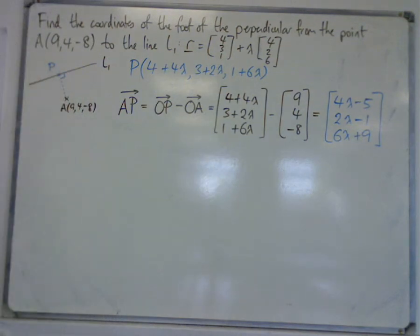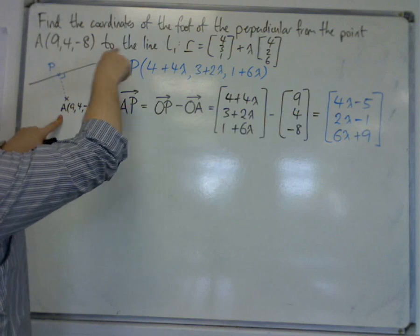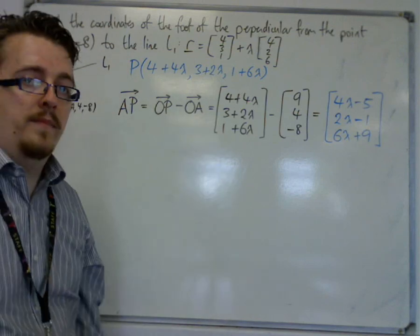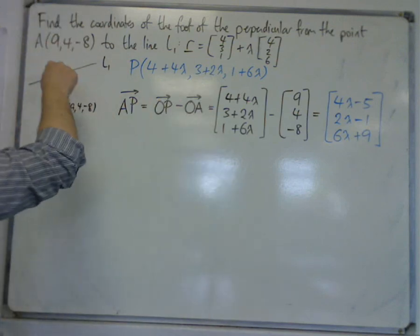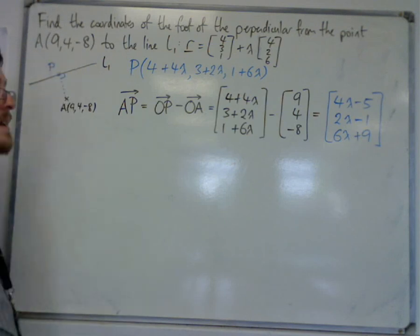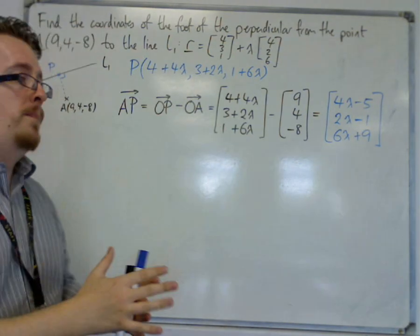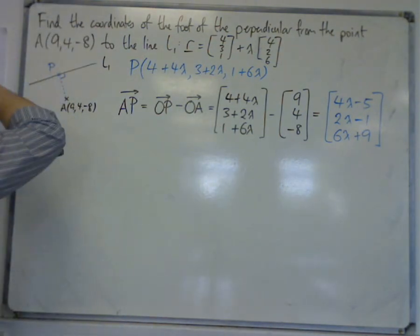So effectively what we found is a vector that will get me from A to any point on the line L1. But remember, I'm trying to find the specific lambda that will give me that vector in particular. Now there is this special property between that vector and that line.